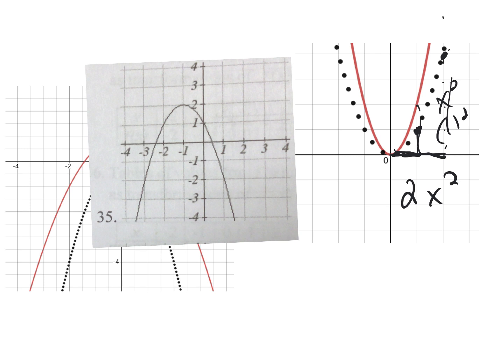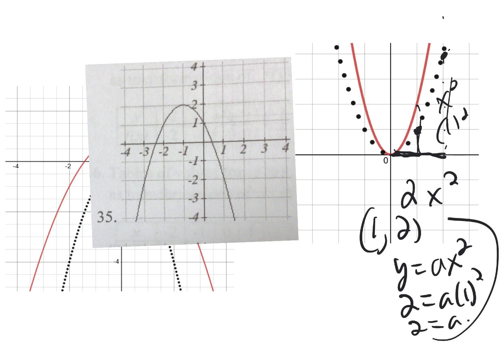Now, if I wanted to find it algebraically, I know when x equals 1, y equals 2 for that red graph. That's the stretch graph. So since I have y equals ax squared, I want to find out what a is. y is 2, x is 1, so 2 equals a times 1, so a is 2. So that's the same math. Either do it graphically or analytically.